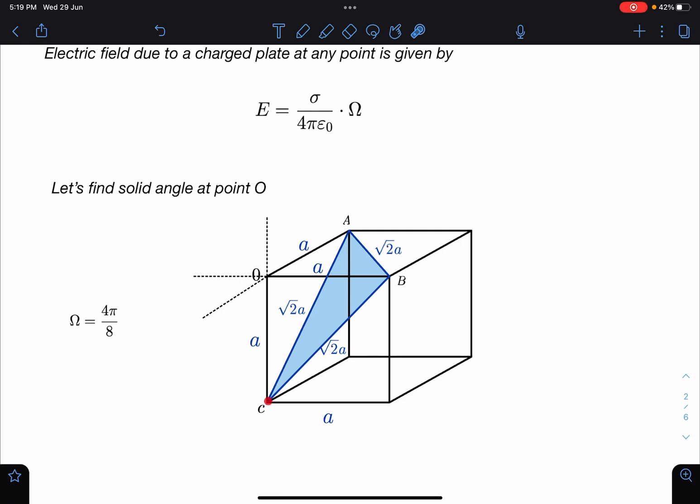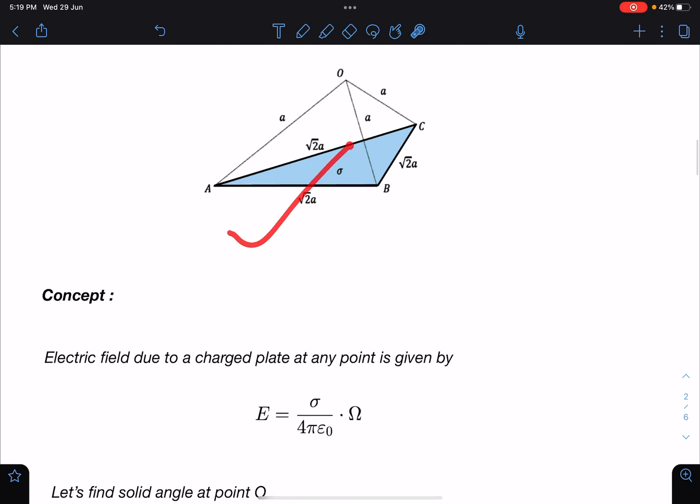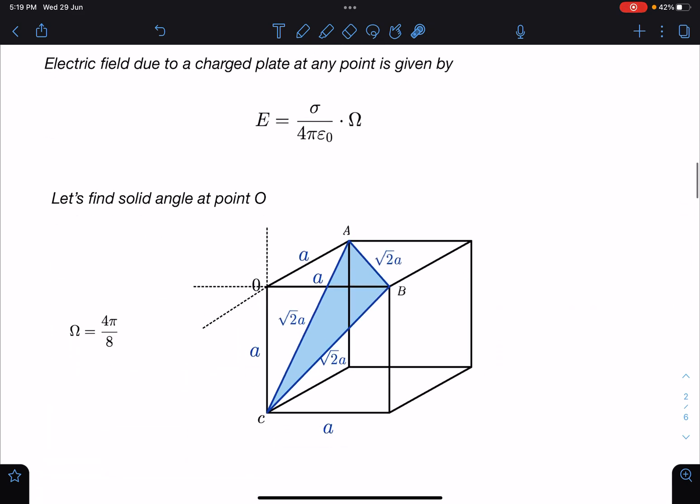Let's find out solid angle at point O. The whole arrangement I am just rearranging and I am making it a cube—that's the beauty in this problem. You can see all these sides are √2a in length and the vertices are at a distance of a.